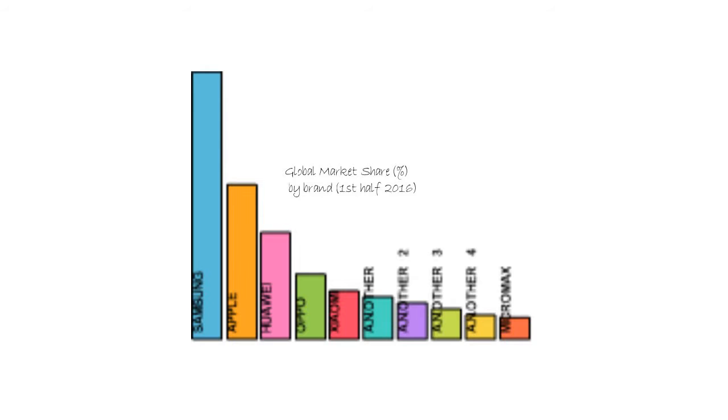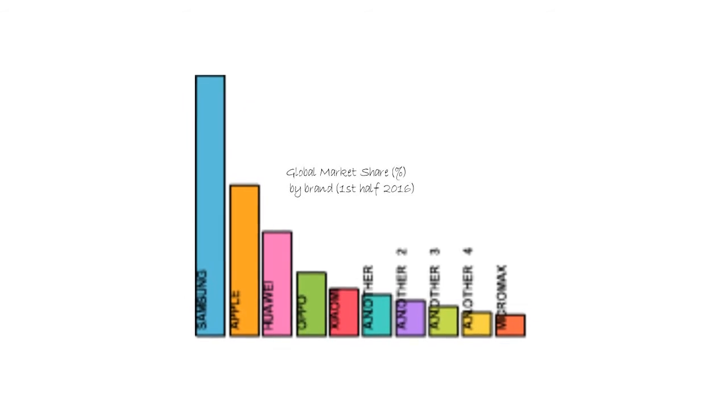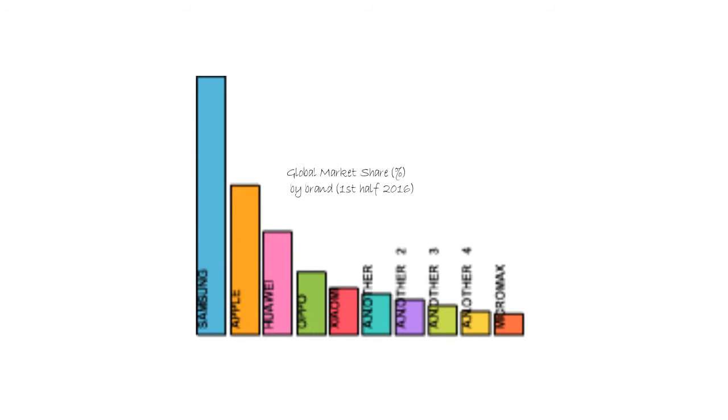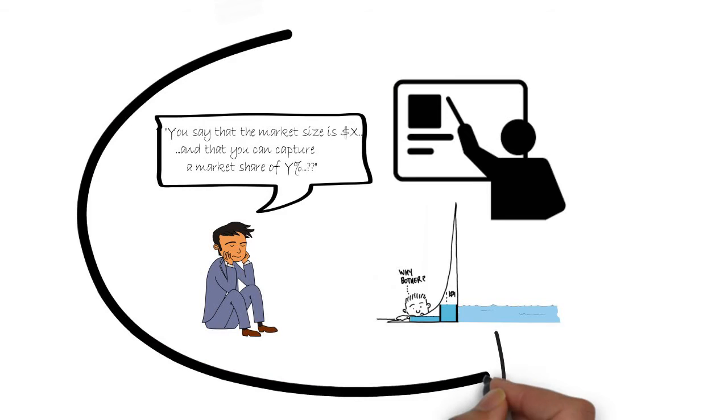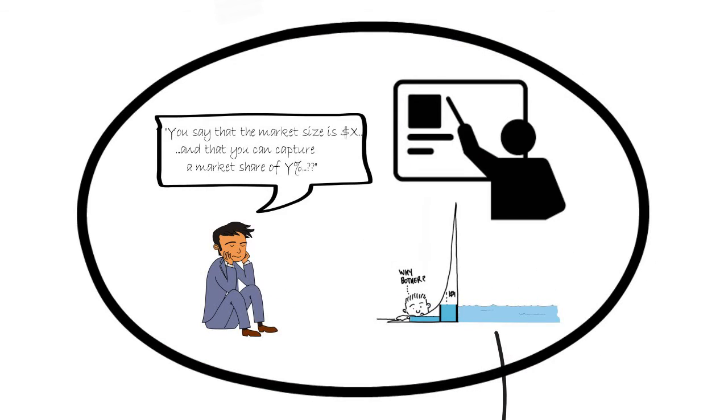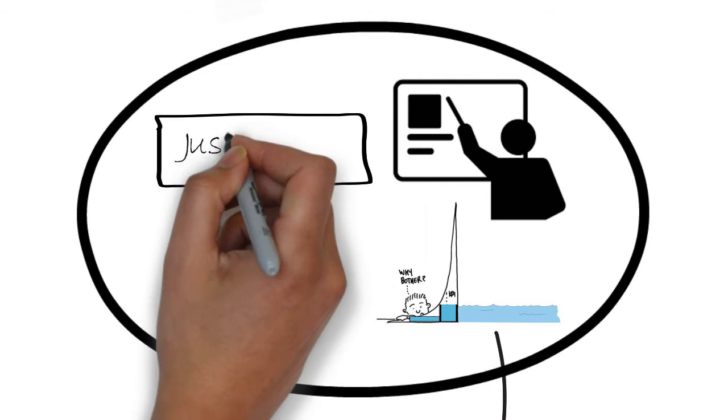This leaves the other players to fight over the other 44%. Consider what life would be like for the world's 10th biggest mobile phone maker, which I understand is the Indian company Micromax with something like a 1.8% share. Now consider again the funding provider presented with the concept that you want to introduce a product that you think will capture X percent of a market.